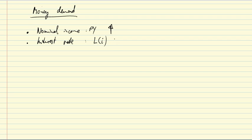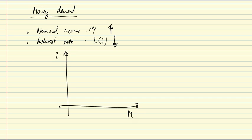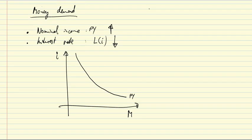So money demand rises with nominal income and falls with the interest rate. Let's put this in a graph where we have on one axis the interest rate and on the other axis the stock of money in the economy. We get a downward sloping function, drawn for a given level of Py. For any given level of Py we have such a function in i-M space, and we can now talk about what changes in nominal income and the interest rate imply.